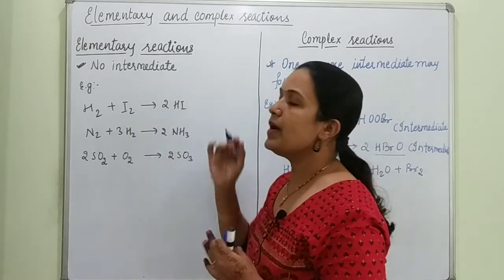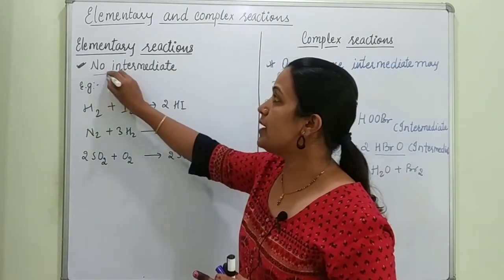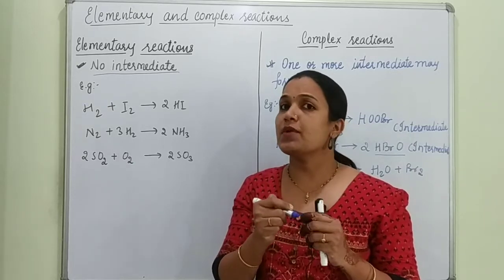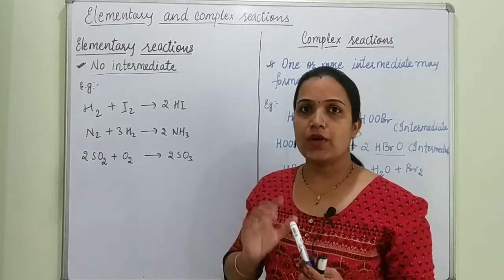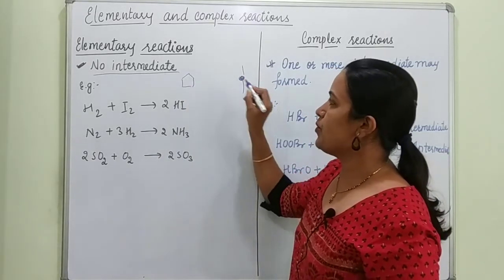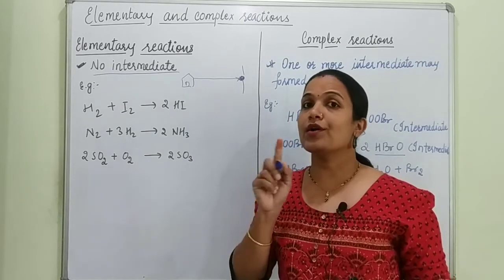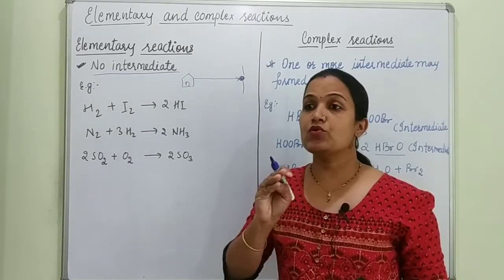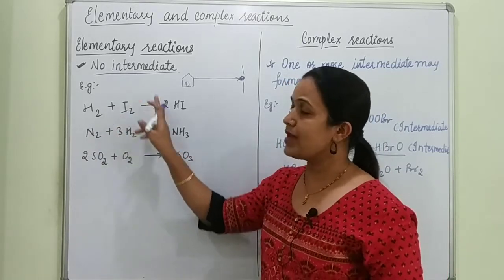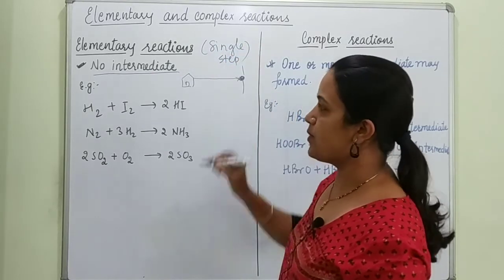Elementary reactions are those reactions in which no intermediate is formed. Reactants directly react with each other to give the product. Using an analogy: if this is my destination and this is my home, I will go directly from home to destination without halting anywhere in between. Similarly, elementary reactions are reactions where reactants react together to get the product directly — this is the single step reaction.